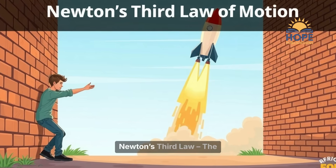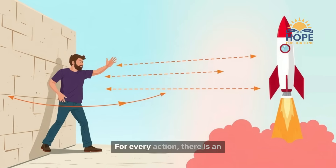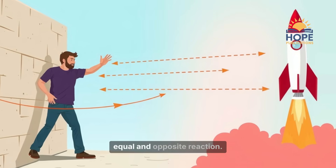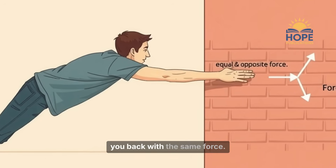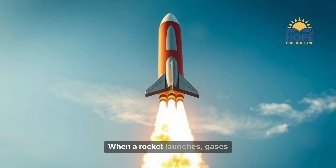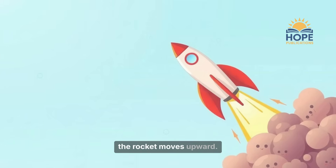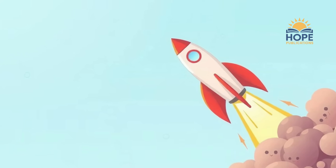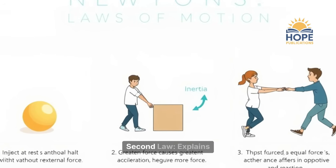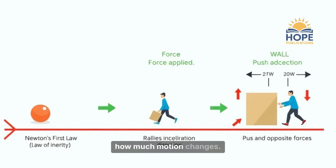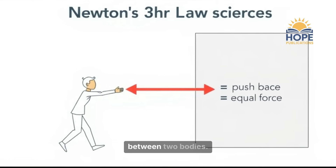Newton's Third Law — The Law of Action and Reaction: For every action, there is an equal and opposite reaction. When you push a wall, the wall pushes you back with the same force. When a rocket launches, gases are pushed downward and, in reaction, the rocket moves upward. In short: the 1st law explains why motion changes; the 2nd law explains how much motion changes; the 3rd law explains interaction between two bodies.